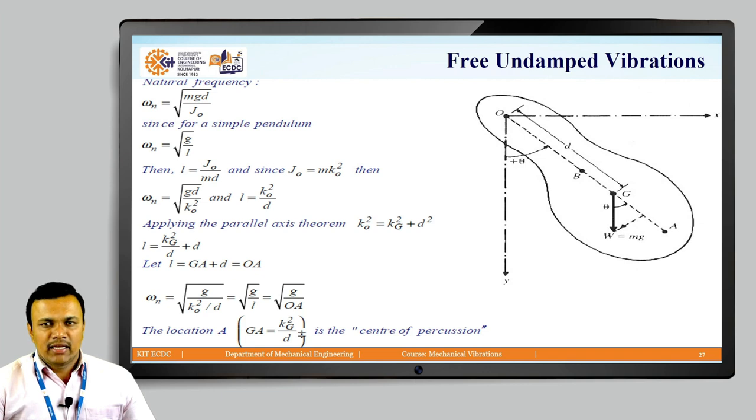Let's assume that l is totally dependent upon the summation of GA plus d which is nothing but OA. From this we can write down the natural frequency as under root of g by k0 square upon d, which has analogy to the simple pendulum natural frequency as under root of g by l, which can be written as under root of g by OA. From this very important concept, the length GA is nothing but kg square by d and the location of the point A is nothing but the center of percussion.